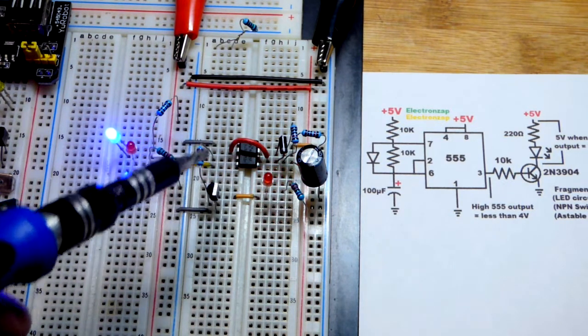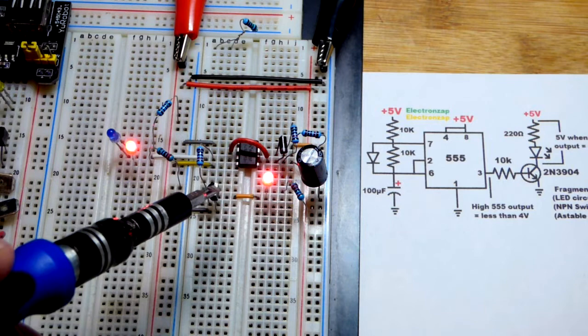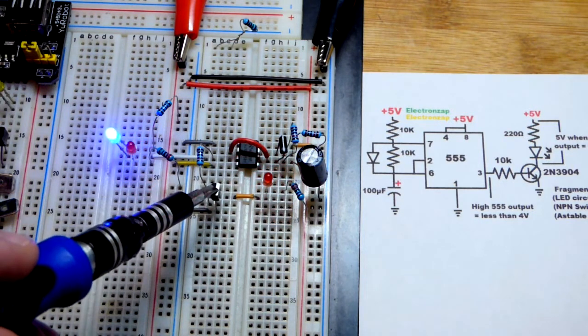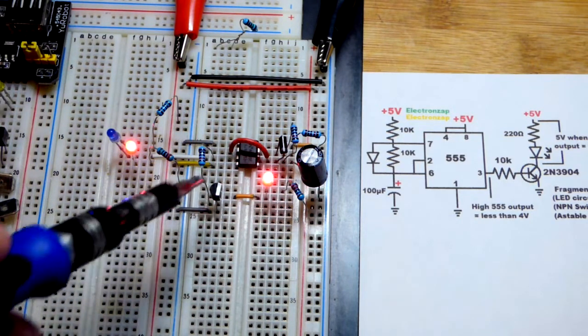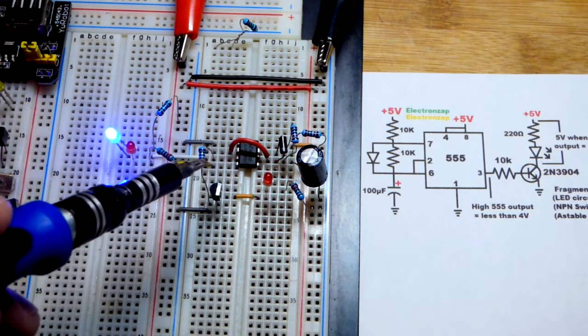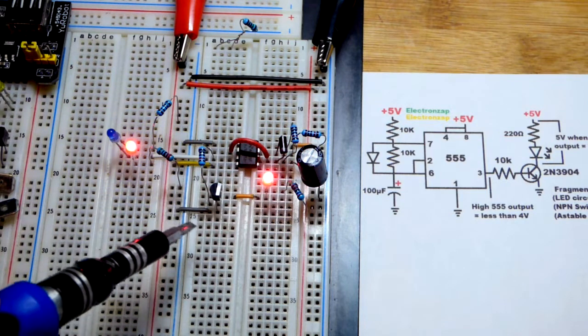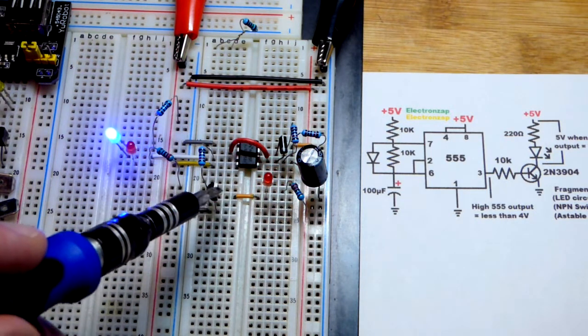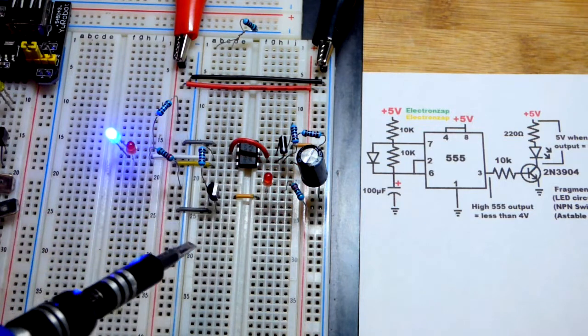We also have it feeding to a transistor. The transistor turns on when the output is high. This is an NPN bipolar junction transistor, the 2N3904. It only has to provide a little bit of current to the transistor. When a little bit of current is flowing through, the transistor turns on and this red LED turns on.